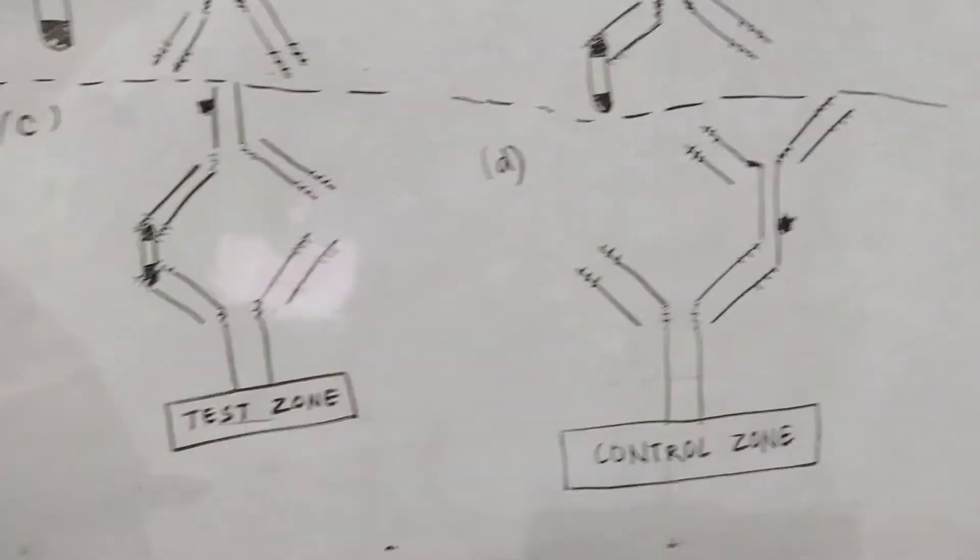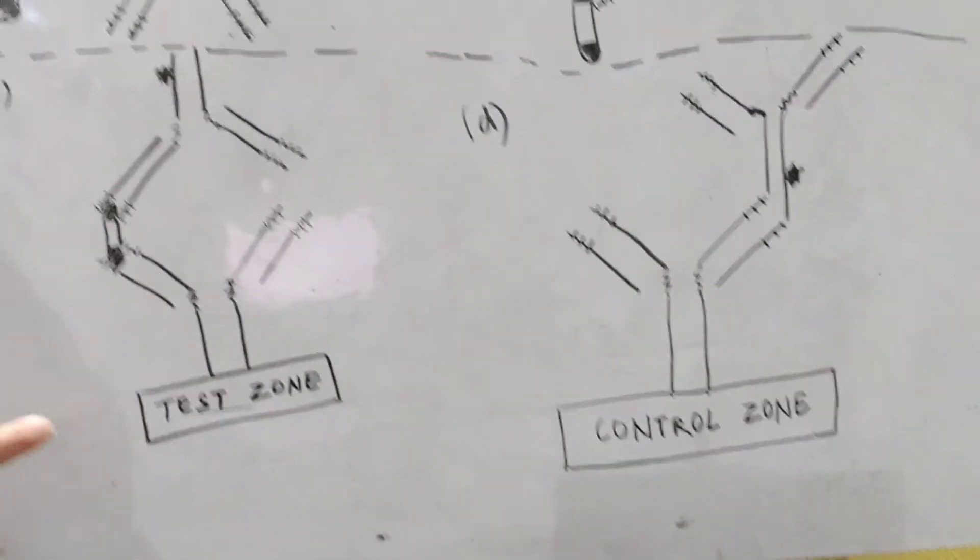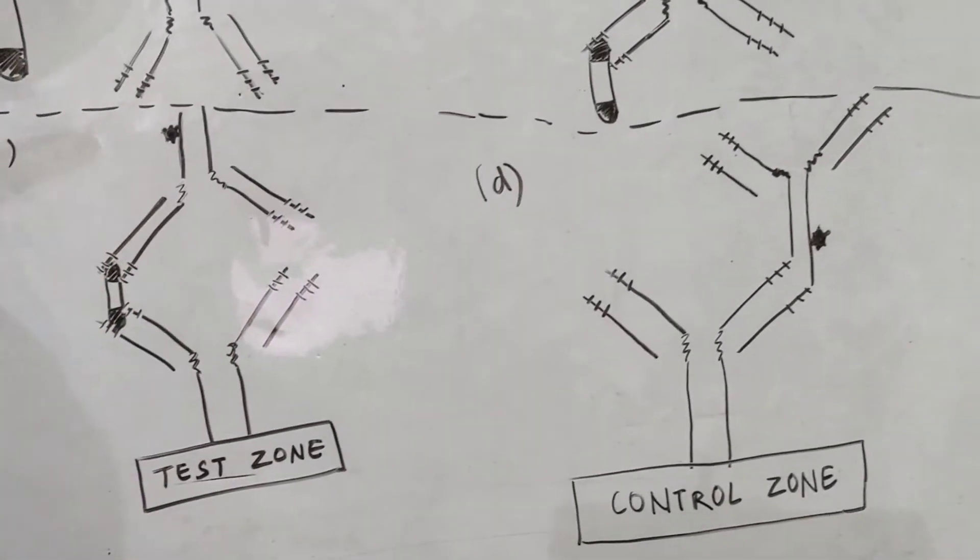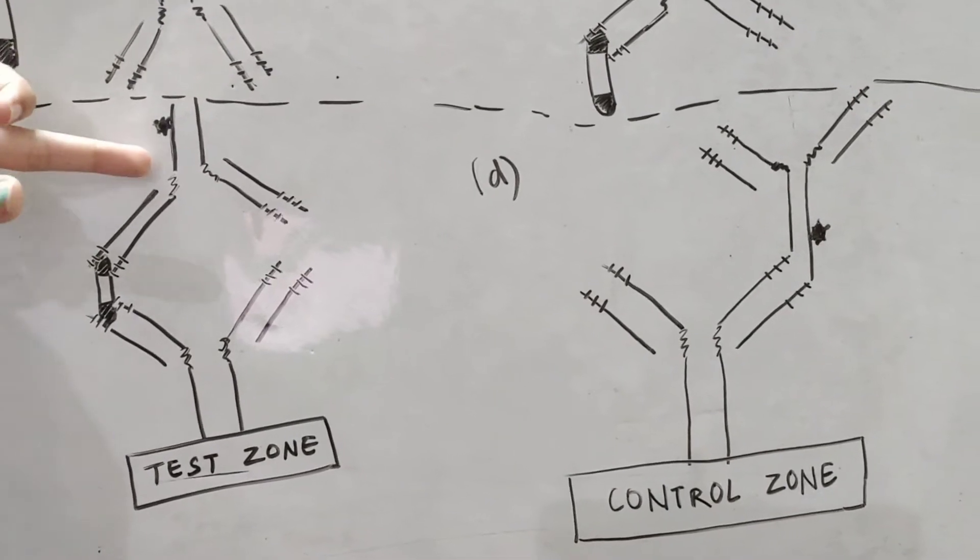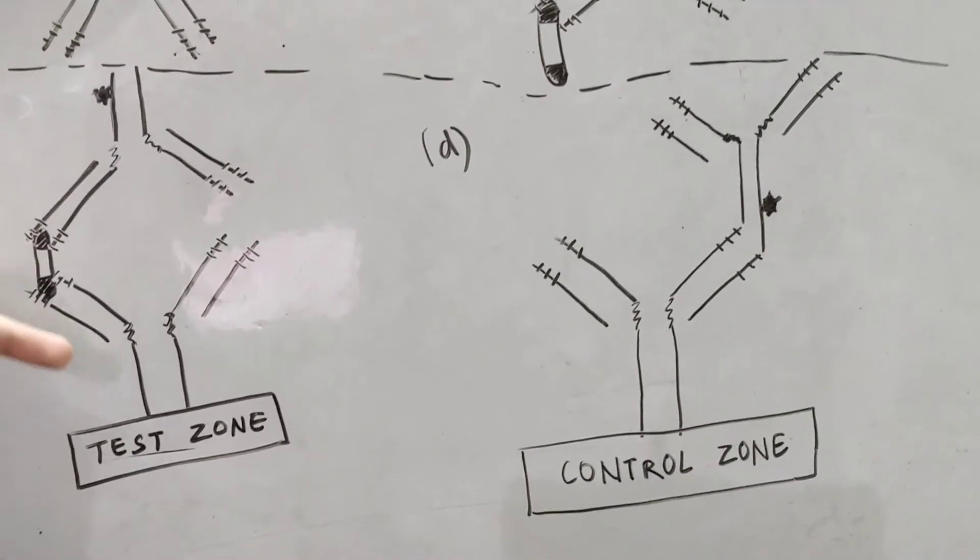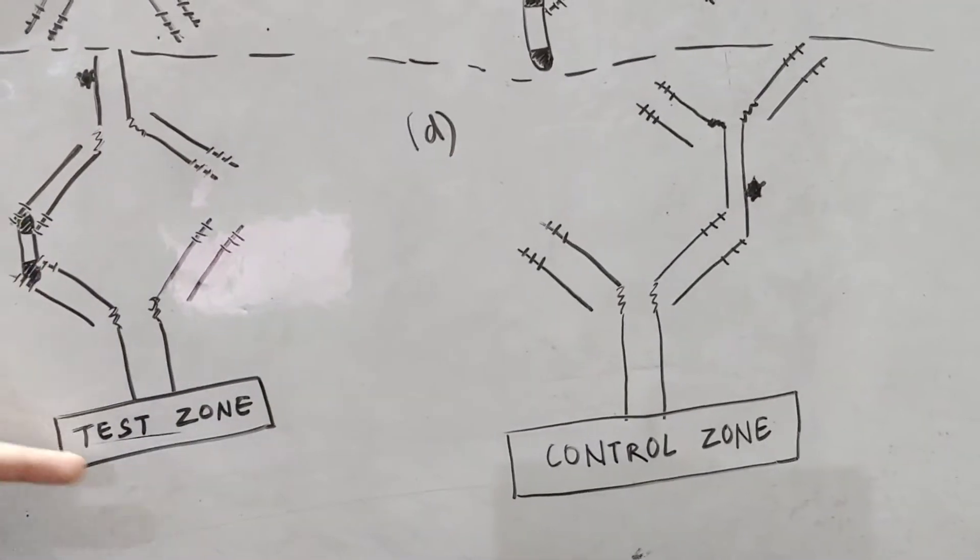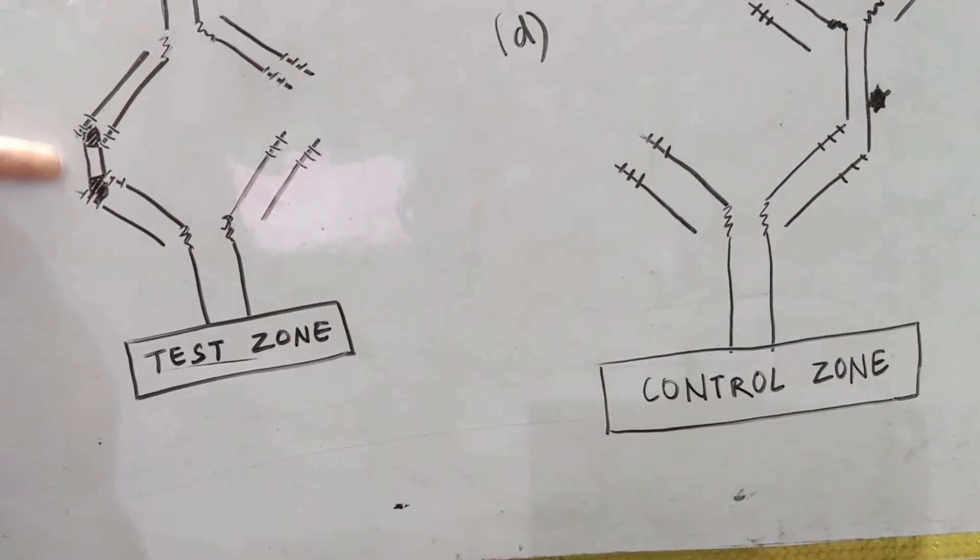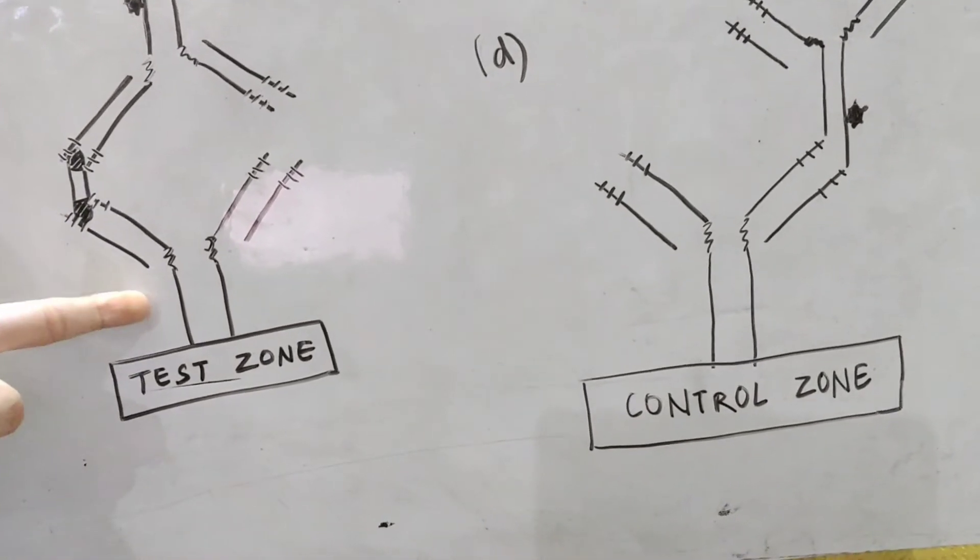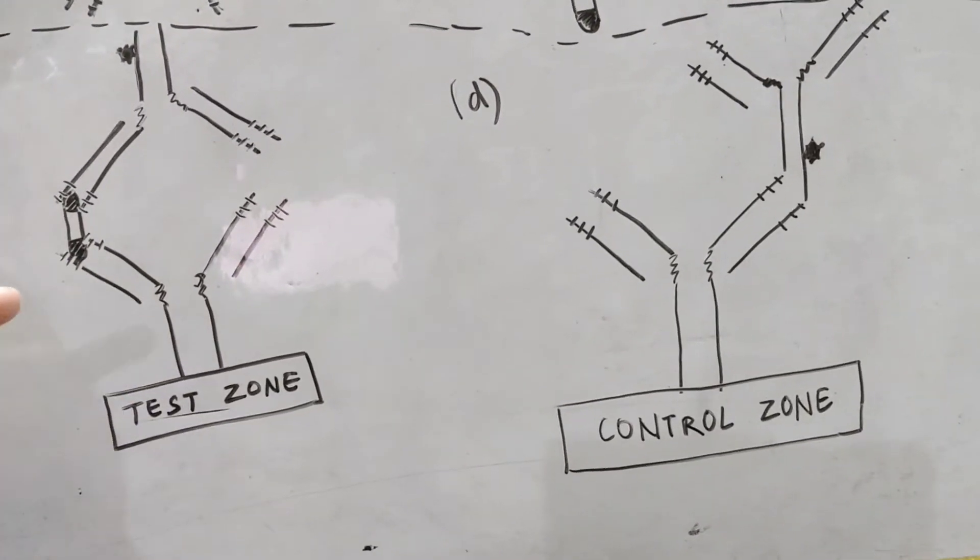Now, there are two zones, test zone and control zone. When we talk about test zone, there is a formation of a sandwich like structure where the labelled antibody binds with an immobilized antibody which is not labelled with the help of the antigen. So, this forms an AB-HB-AB sandwich.